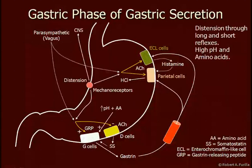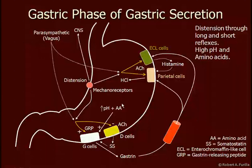The gastric phase occurs when food actually enters the stomach. We continue with parasympathetic activity triggering histamine and acid secretion, the same process as in the cephalic phase. In addition, mechanoreceptors trigger the enteric nervous system to enhance acid secretion and increase gastrin secretion, and also send signals to the CNS which feeds back on the parasympathetic nervous system. The rise in pH and increase in amino acid concentration also enhance gastrin secretion.